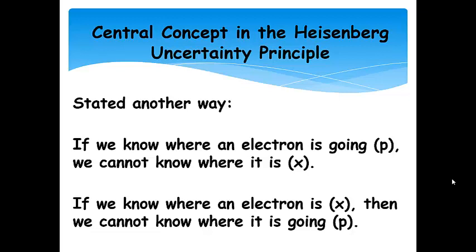So, stated another way, if we know where an electron is going, so that's the momentum, we cannot know where it is. And, if we know where an electron is, then we can't know where it's going.